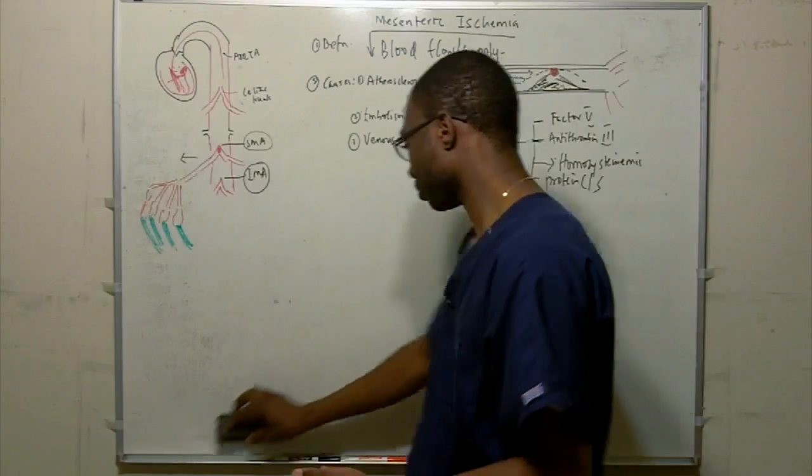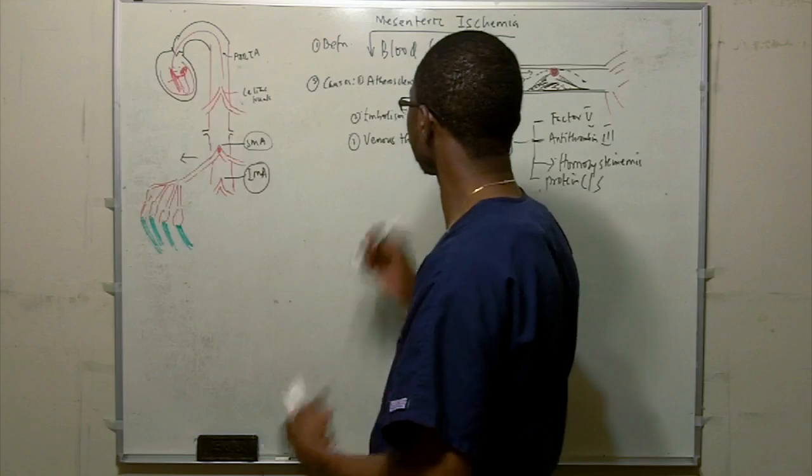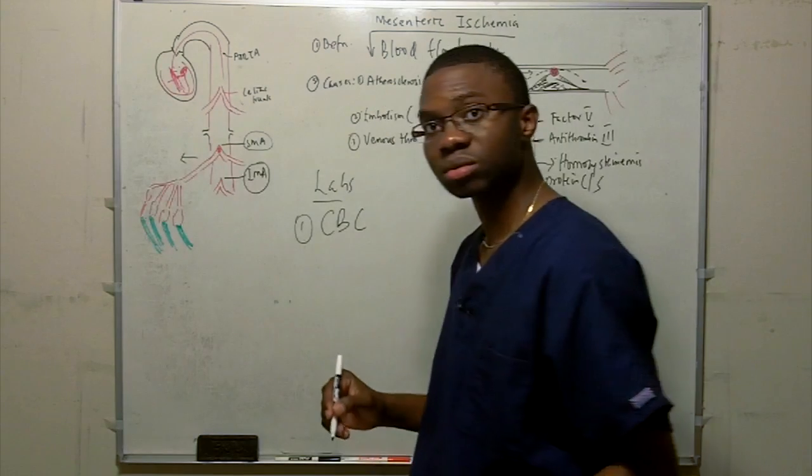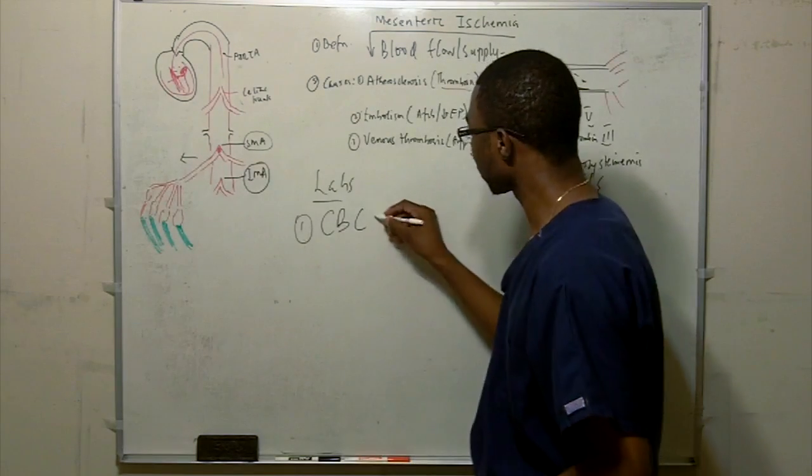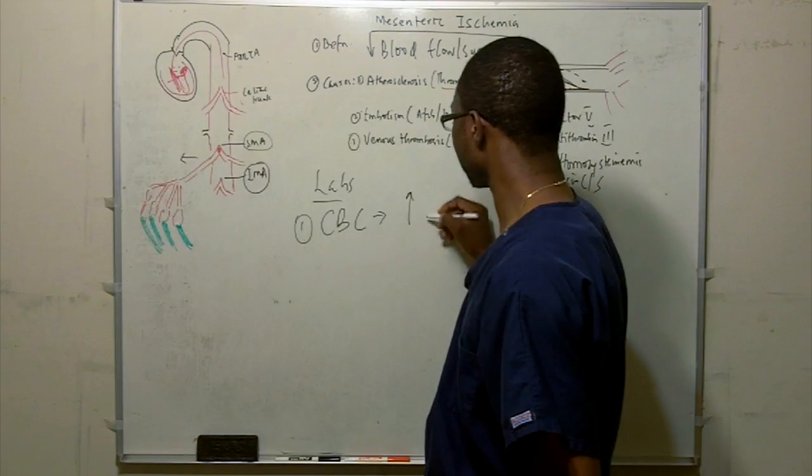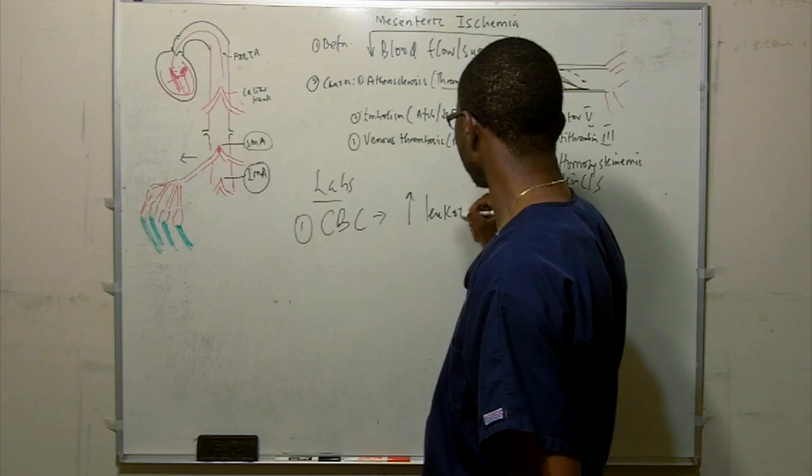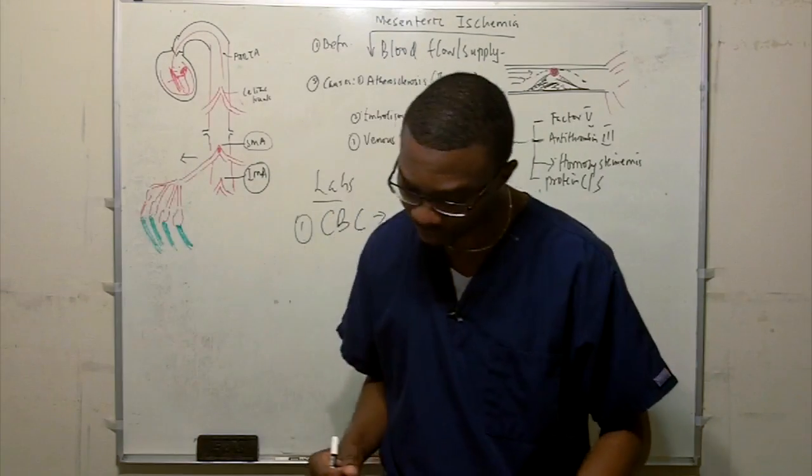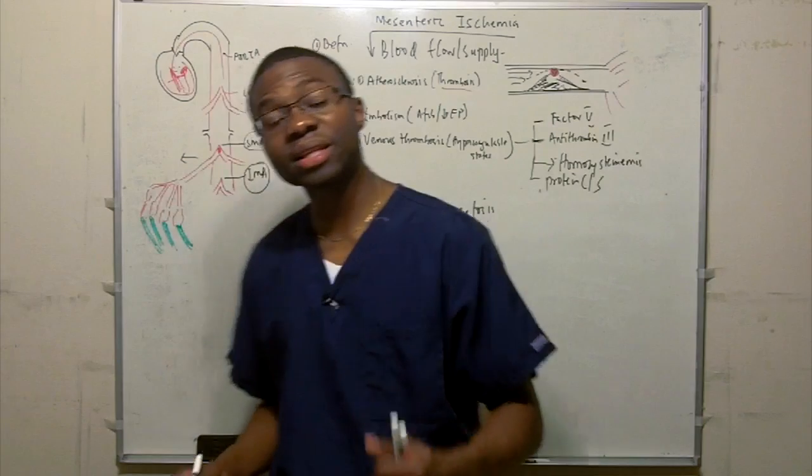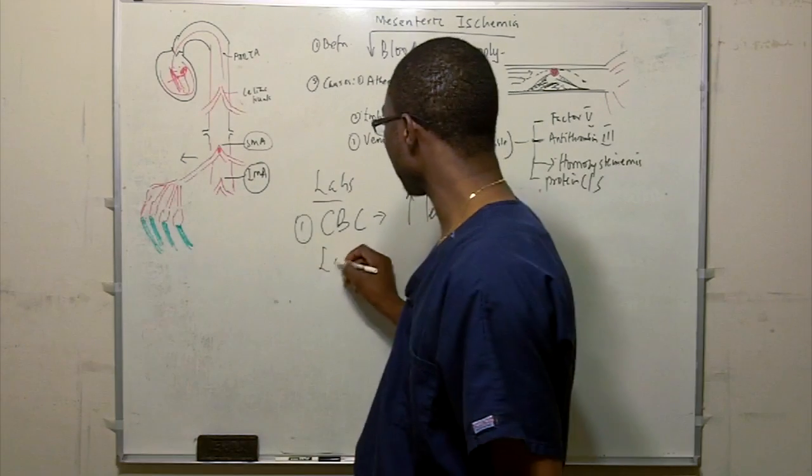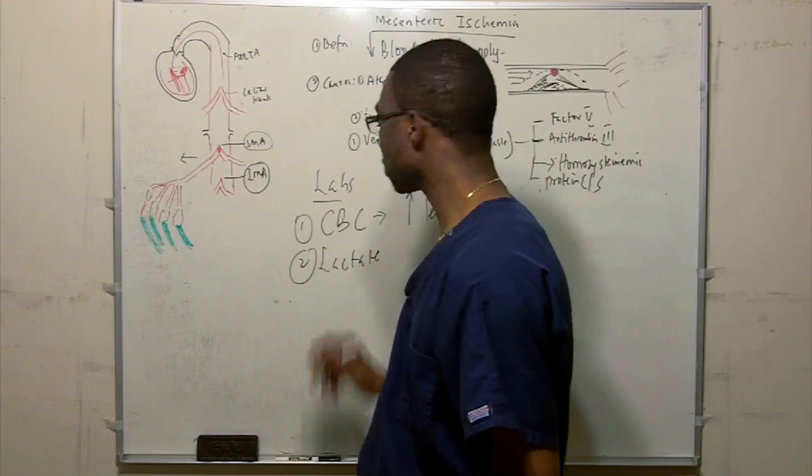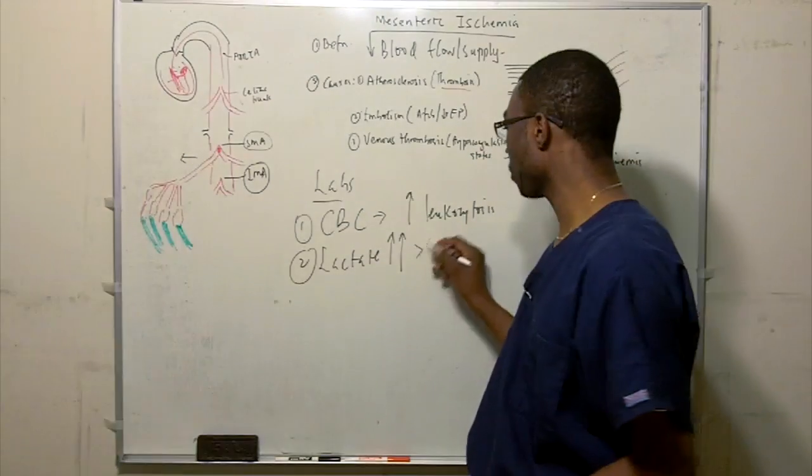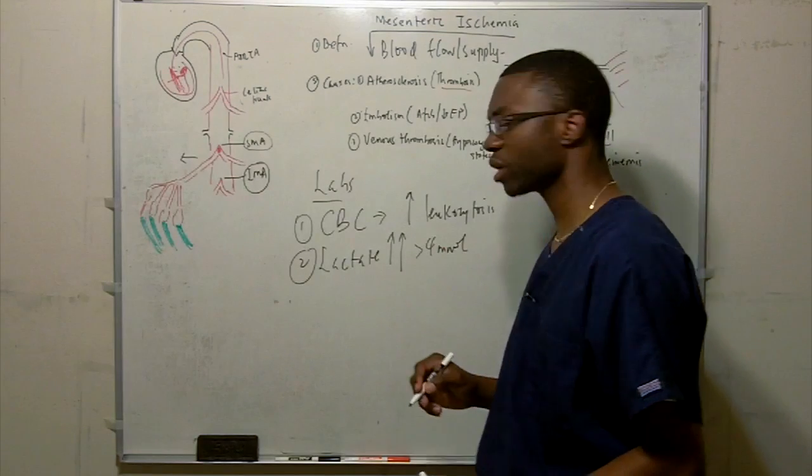So what are we going to order first? Lab-wise, I want to order a complete blood count. Because then I'll be able to see leukocytosis. A lot of white cells rush into the area of inflammation. Another thing that's extremely important that you order is a lactate level. Let's explain lactate. They're going to have a lot of lactate greater than 4 millimoles per deciliter.